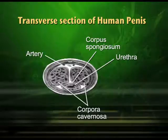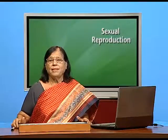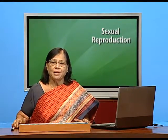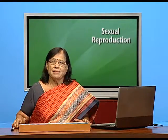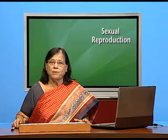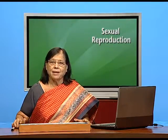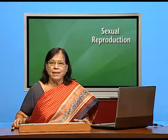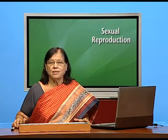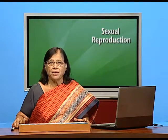The male reproductive system is designed to transfer sperm from the male's body to the female's body. It includes testis, epididymis, vas deferens, seminal vesicles, prostate, Cowper's gland, and penis. Testis is the primary sex organ, and all other organs are secondary or accessory sex organs.